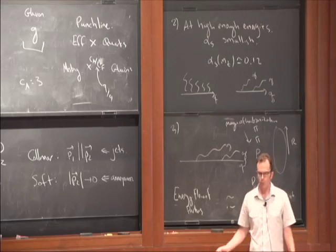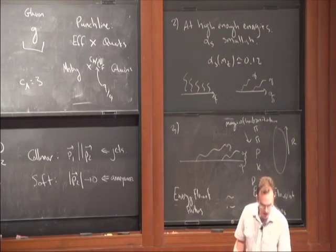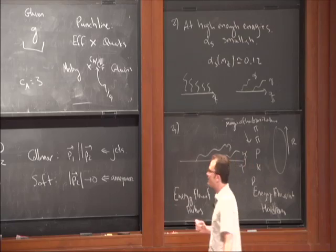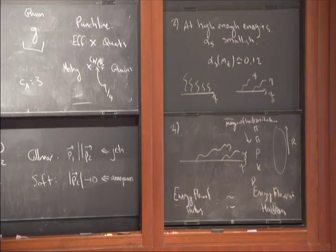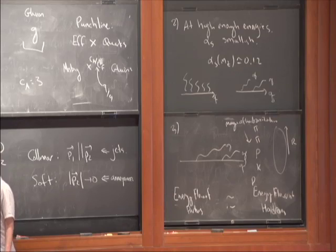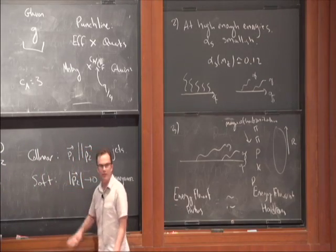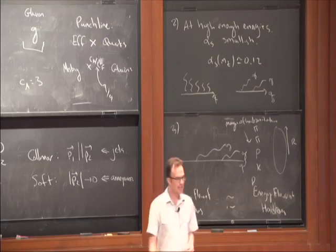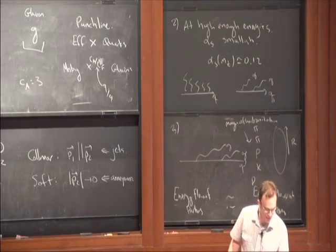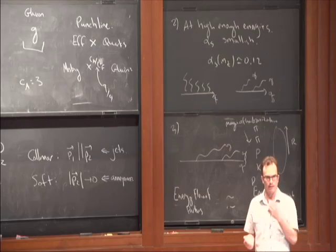So where we are: we think jets will form, we can study jets by studying amplitudes of short-distance partons, and the dominant behavior is given by soft and collinear singularities. We should be able to use that information to figure out how to separate quarks versus gluons.